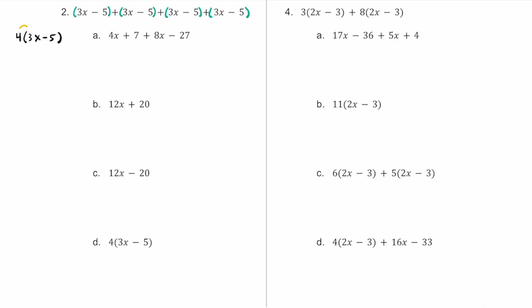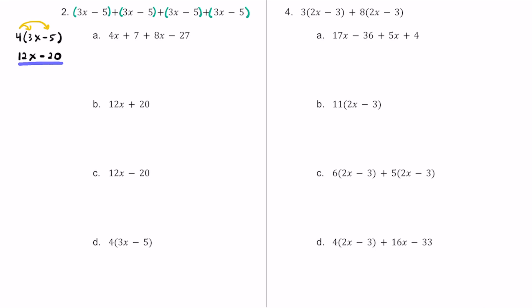If you go ahead and distribute or combine like terms — 4 times 3x is 12x, and 4 times negative 5 is negative 20. So 3x plus 3x plus 3x plus 3x equals 12x, and four negative 5s make negative 20. This is the original expression in simplest terms: 12x minus 20.